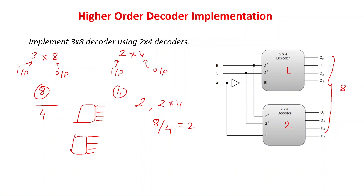Now coming to the input side. In the 2x4 decoder we have two inputs, A and B. In the 3x8 decoder we will have inputs A, B, and C. So A and B are the two inputs for each 2x4 decoder. If both inputs are 0,0 then output D0 will be 1; for 0,1 output D1 will be 1; for 1,0 output D2 will be 1; for 1,1 output D3 will be 1. Similarly, we will have eight combinations for three variables in the 3x8 decoder, and only one output will be high.